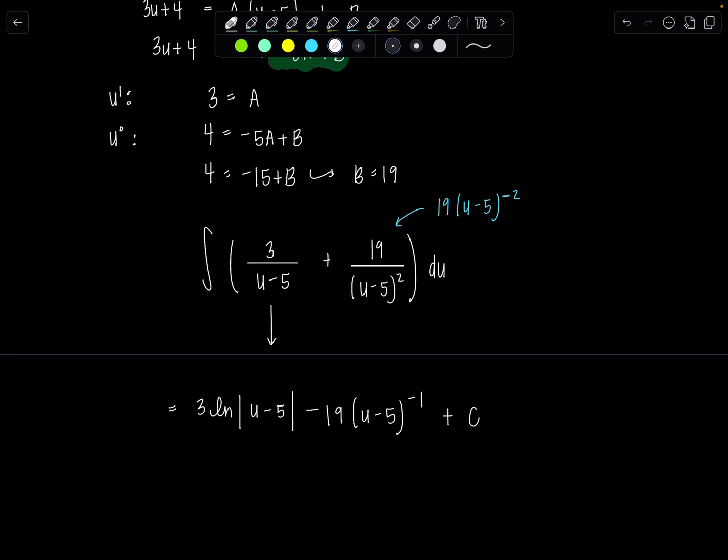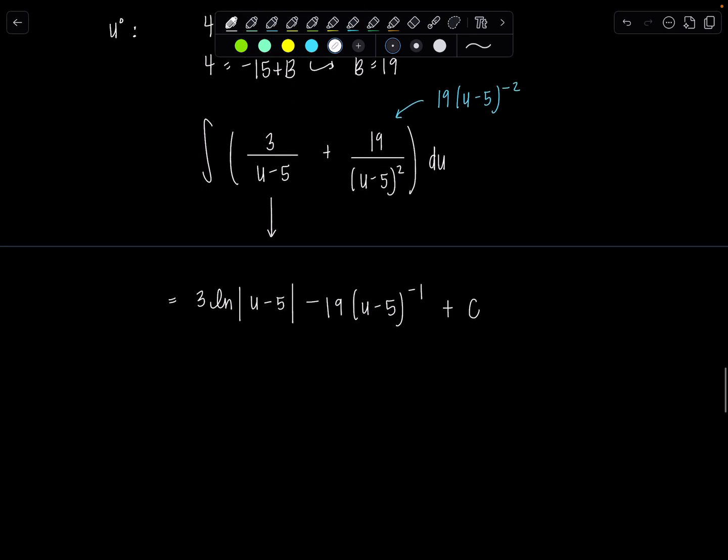All right, last thing: let's go back and replace u with what it originally was—it was e to the t. So remember we made that substitution, and I'm also going to rewrite this u minus 5 in the denominator just to make things look pretty. So 3 ln absolute value e to the t minus 5, minus 19 over e to the t minus 5, plus C.